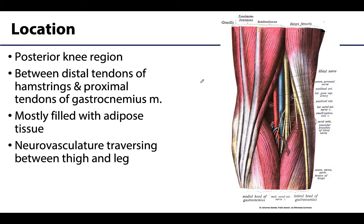The fossa is bound by muscle tendons. Specifically, we're going to have hamstring muscles superiorly — here are the medial hamstring muscles and your lateral hamstring muscle, the biceps femoris. It is also bound by the two heads of the gastrocnemius, which is one of your calf muscles. Before dissection, this area is filled with a great degree of adipose tissue or fat to protect the structures traveling within, and you can see this is fairly large neurovasculature traversing between the thigh and the leg.